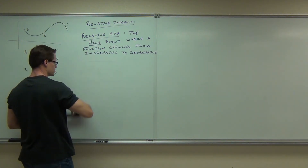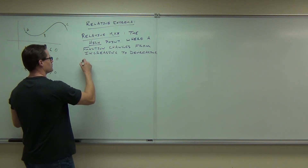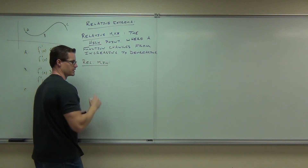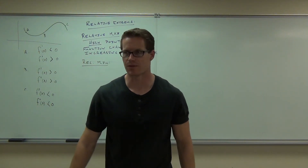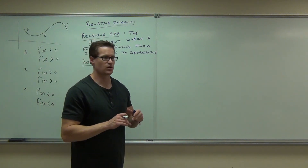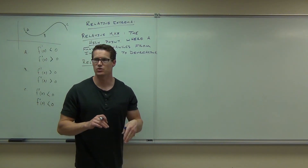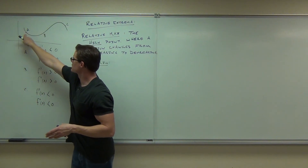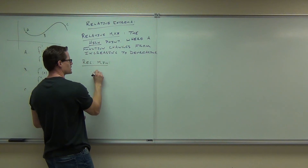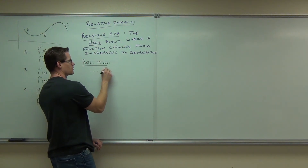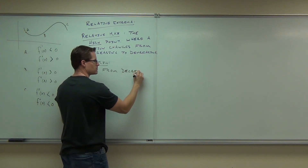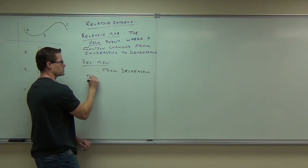Relative min has basically the opposite definition. A relative min is going to be a low point in an interval — in other words, it's going to be where you change from decreasing to increasing. That should make sense: if you go from decreasing to increasing, you're going to have a little valley, a low point. Where the function changes from decreasing to increasing.